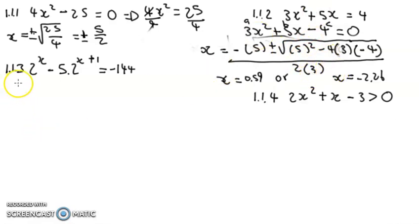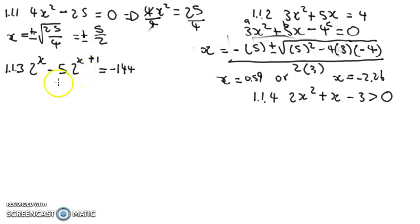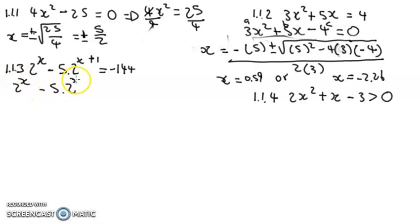For Question 1.1.3, if you see something like 2 to the power 2x you'd expect to use a substitution like letting k equal something. But here we have 2 to the power x — x has no coefficient — so I know the question is going to be straightforward. I can just take out the common factor between the two expressions.